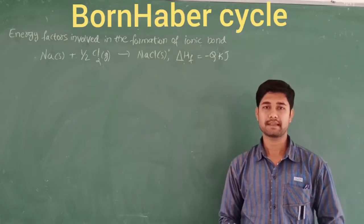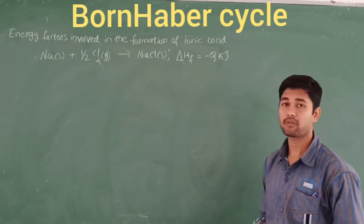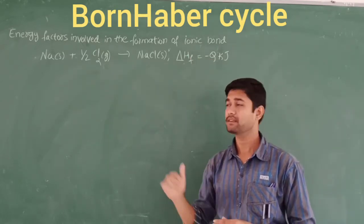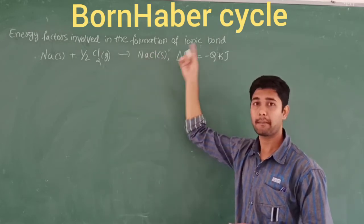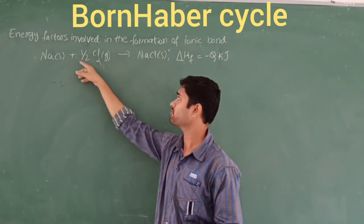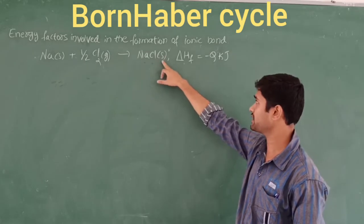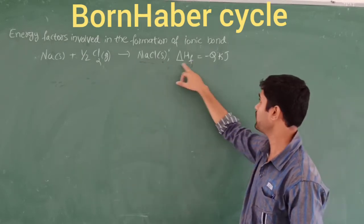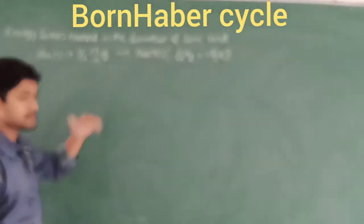Let's discuss the Born-Haber cycle. This refers to the energy factors involved in the formation of the ionic bond. We take the formation of sodium chloride crystal in solid state, obtained by combining one mole of sodium metal in solid state and half mole of chlorine gas in gaseous state. Delta H here is the enthalpy of formation of NaCl, measured in kilojoules.